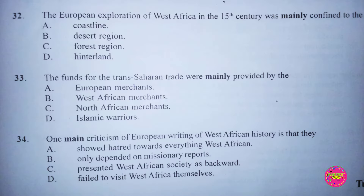Question 33. The funds for the Trans-Saharan trade were mainly provided by the: A. European merchants, B. West African merchants, C. North African merchants, D. Islamic warriors. The correct answer to this question is C. North African merchants.